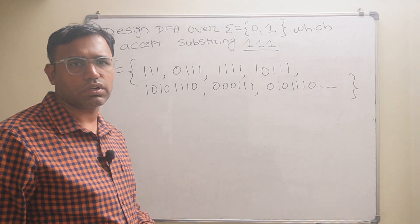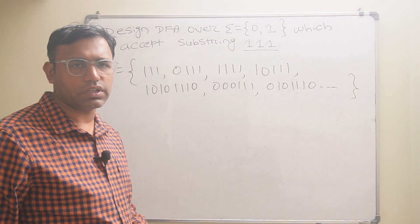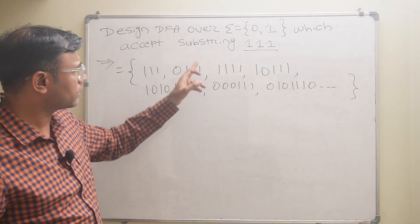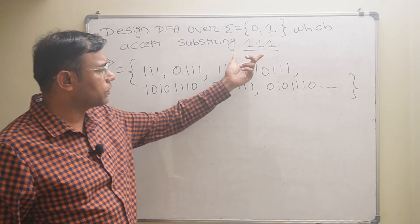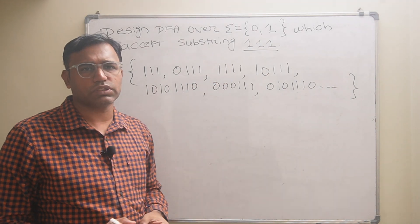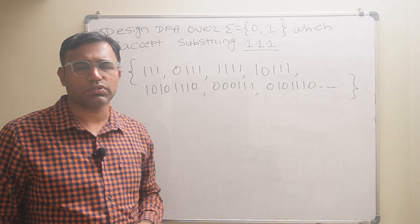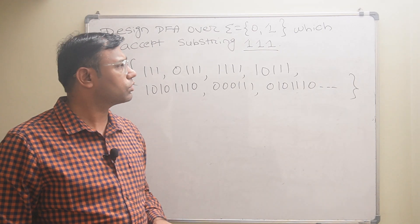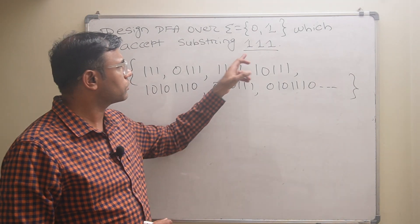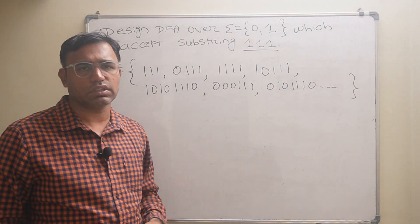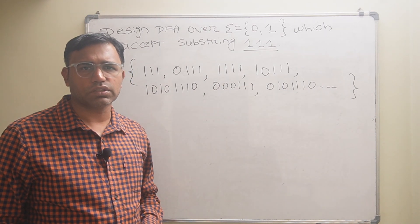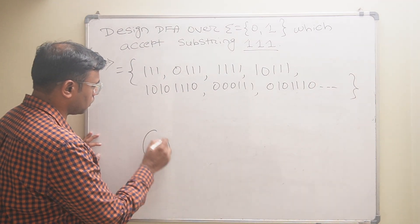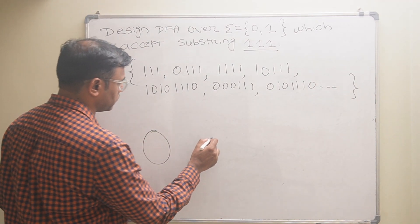The total number of states in the DFA equals the length of the substring plus one. Here the length of the substring is three, so total number of states will be four.